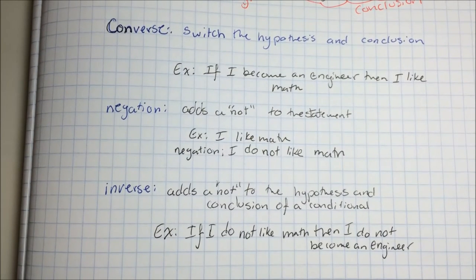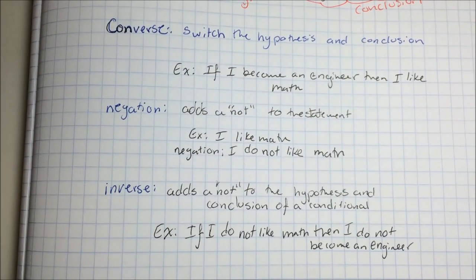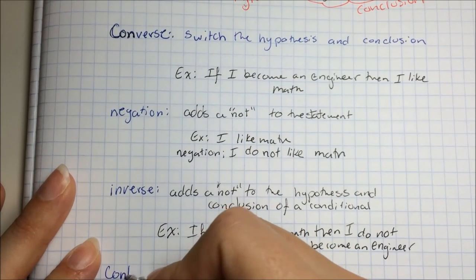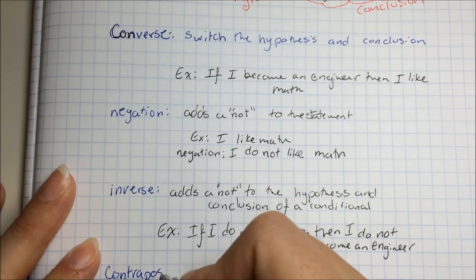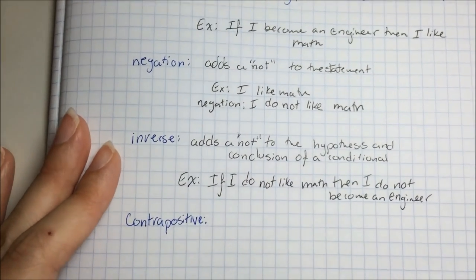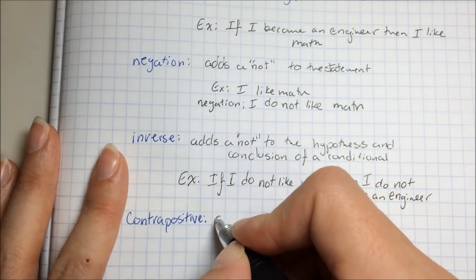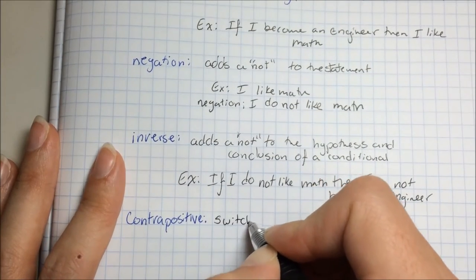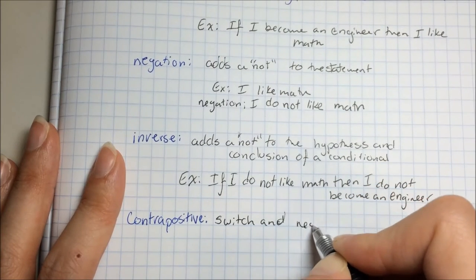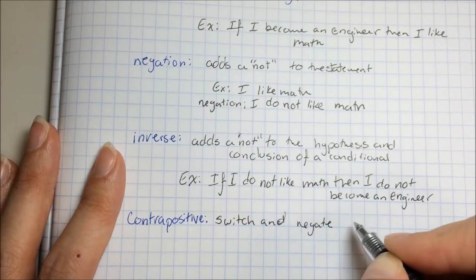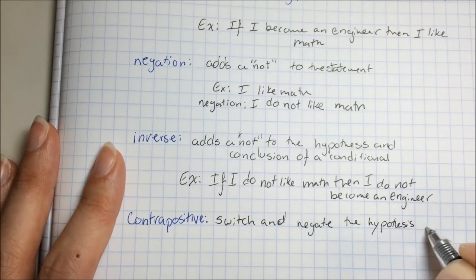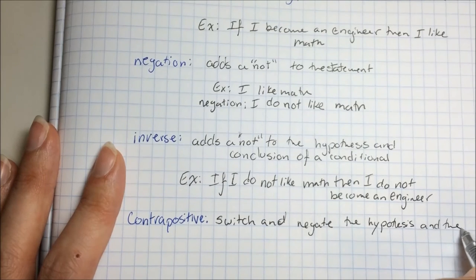The last type of statement that we can make is a contrapositive. That's where we switch and negate the hypothesis and the conclusion.